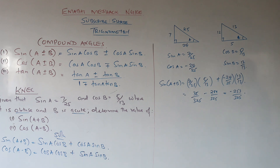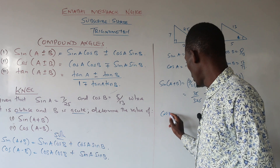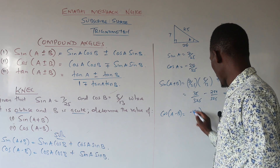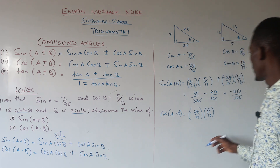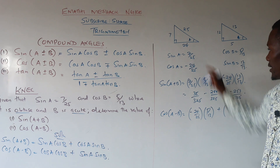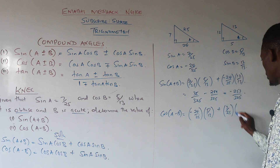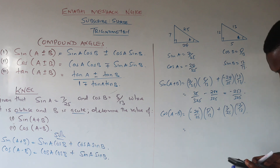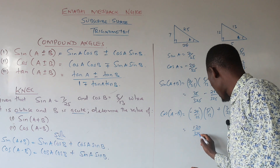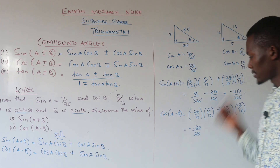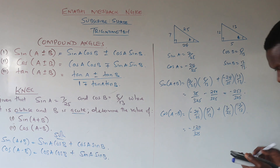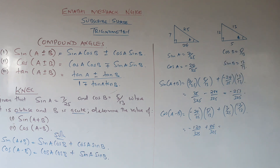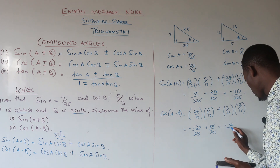For cosine of a minus b: cos a cos b plus sin a sin b equals (negative 24/25)(5/13) plus (7/25)(12/13). The first term gives negative 120 over 325 and the second gives 84 over 325. So 84 minus 120 gives negative 36 over 325. That is the solution for cos of a minus b.